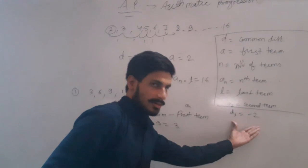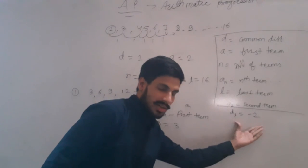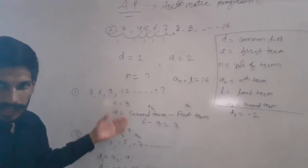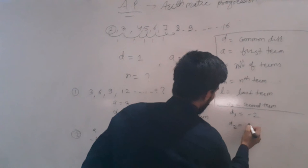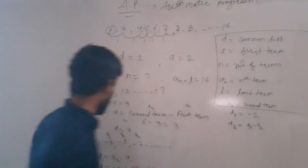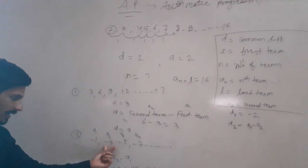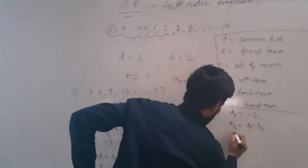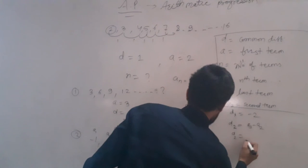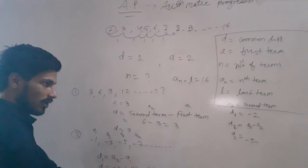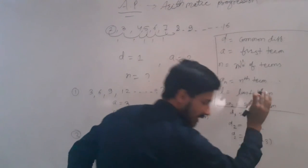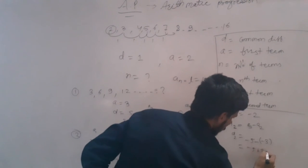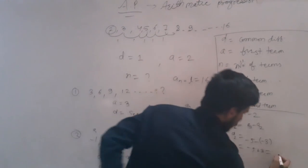So D1 is minus 2. Now we calculate D2, which is A3 minus A2. A3 is minus 5 and A2 is minus 3. So D2 equals minus 5 minus minus 3, which is minus 5 plus 3, giving D2 equals minus 2.